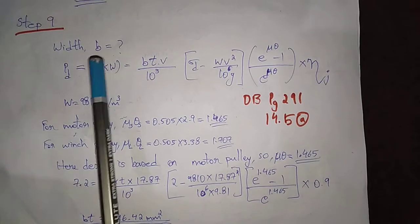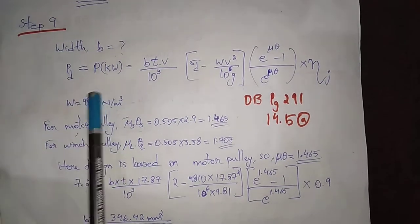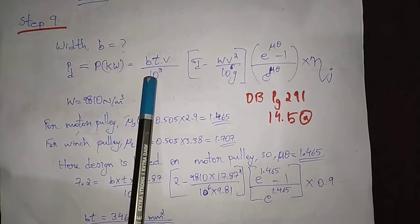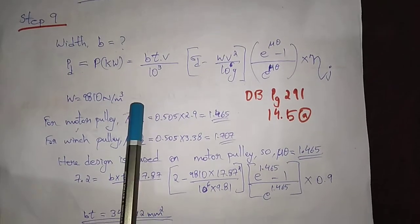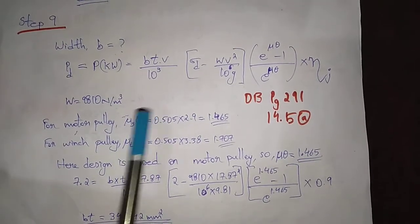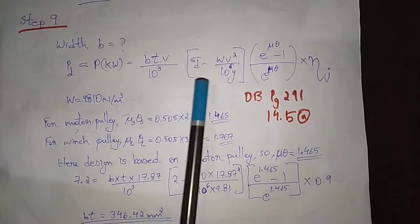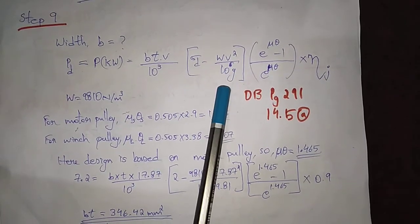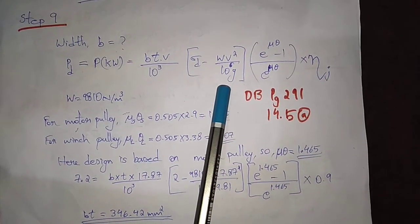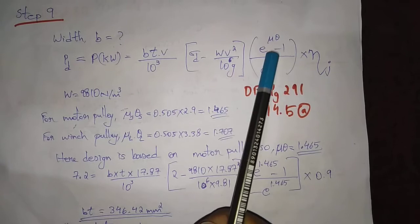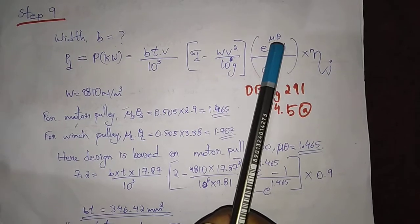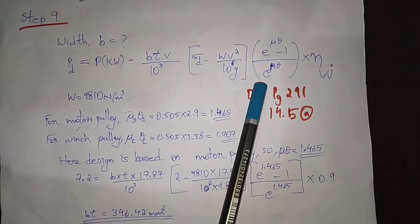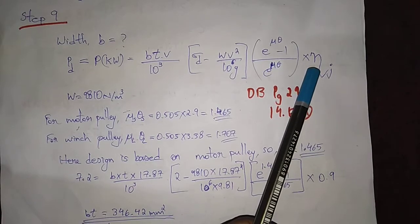Now Step 9: we will take the power equation — b into t into v divided by 10 power 3, into sigma_d minus w into v squared divided by 10 power 6, into g, into (e raised to mu×theta minus 1) divided by (e raised to mu×theta), into efficiency.